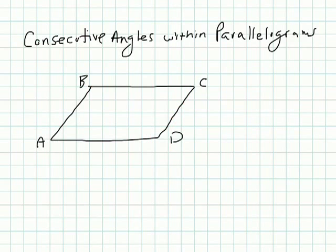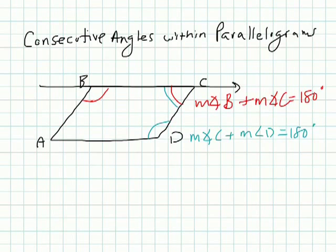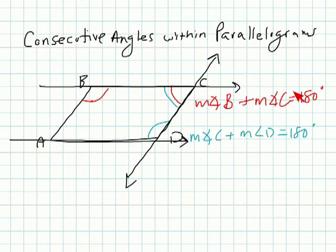This theorem states that consecutive angles are supplementary: the measure of angle B plus the measure of angle C equals 180 degrees, and angle C plus angle D are also supplementary — the measure of angle C plus the measure of angle D equals 180 degrees. We know that from same-side interior angles. If we extend the parallel lines, this transversal gives us same-side interior angles that add to 180 degrees. That's exactly what you have here.